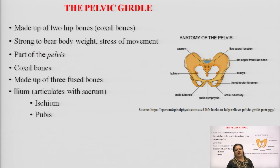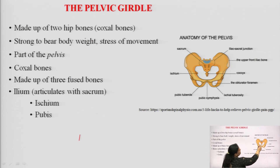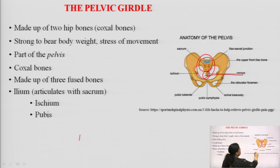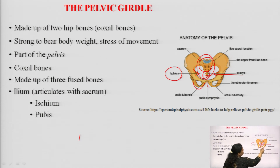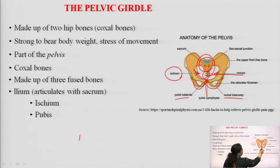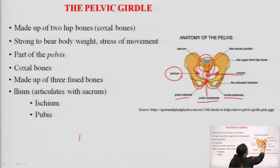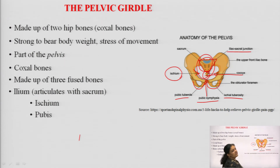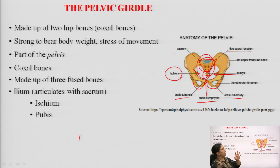Coming to the pelvic girdle, this is the butterfly-like anatomy of the pelvis. It includes the sacrum — fused in adults — and the coccyx, one in number in adults. The protruded area inside the hollow space is the ischium. There are two pubic tubercles and the ischial tuberosity, and in between them is the pubic symphysis. The sacrum is joined with the ilium forming the iliosacral junction.